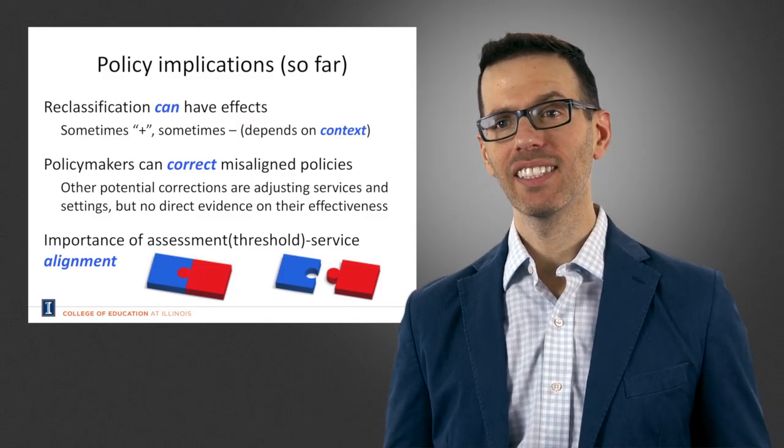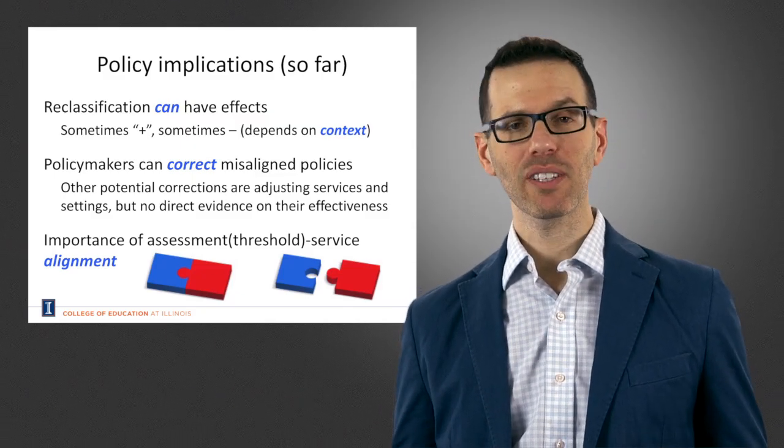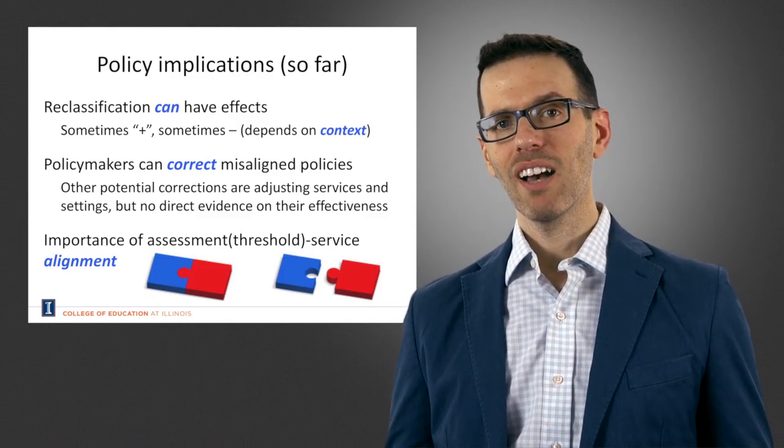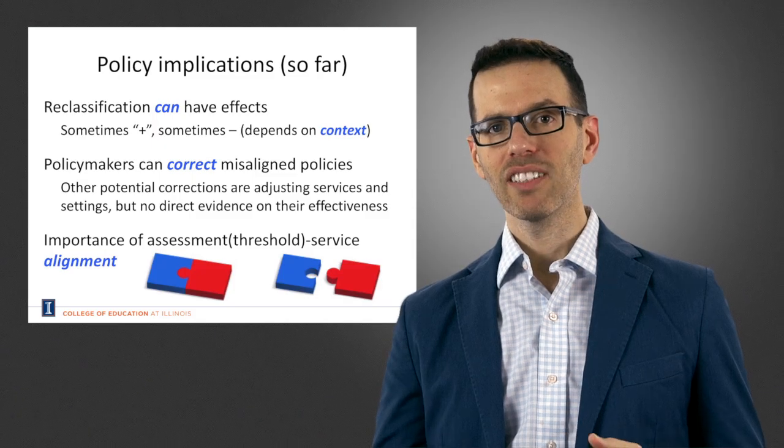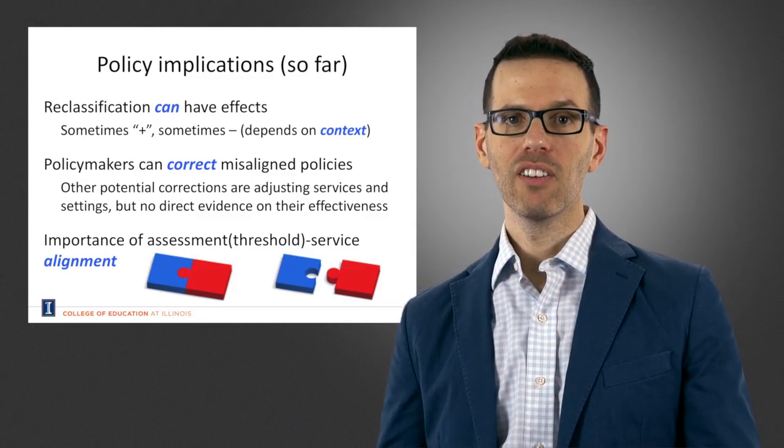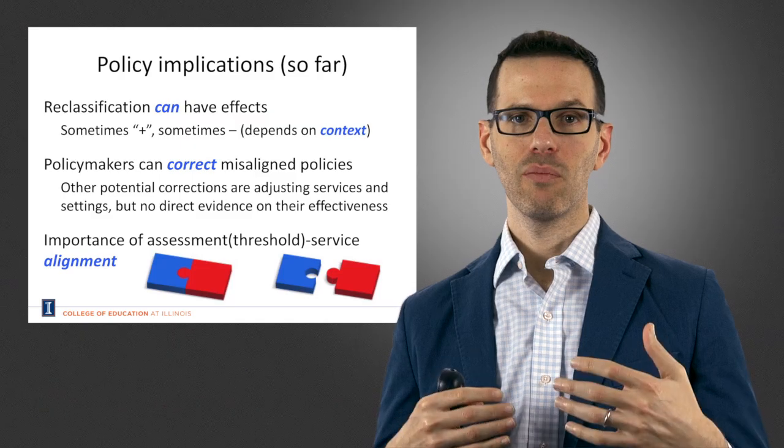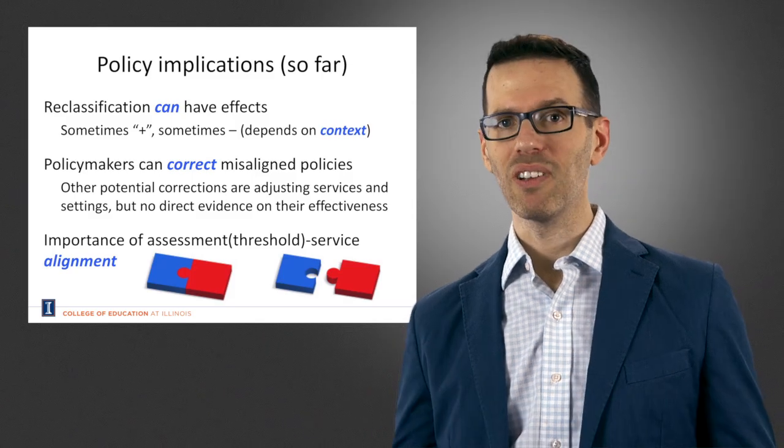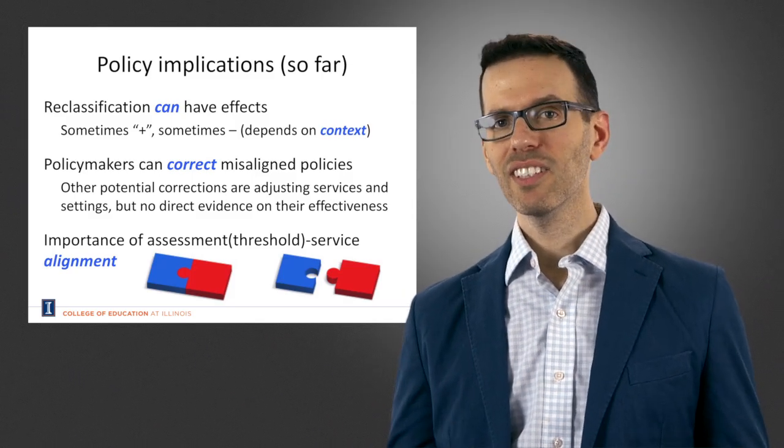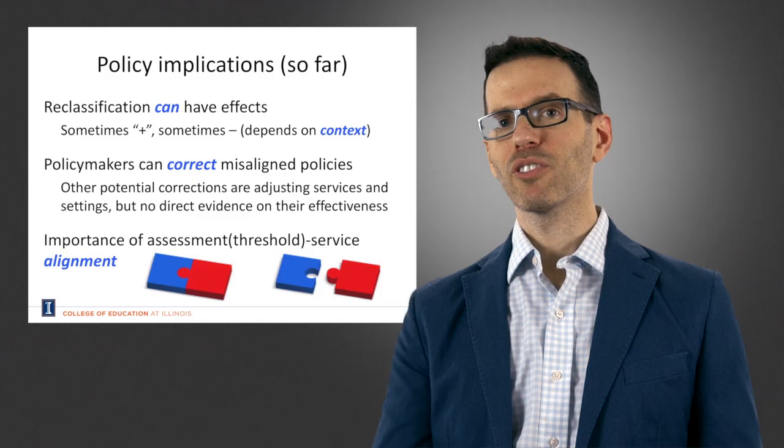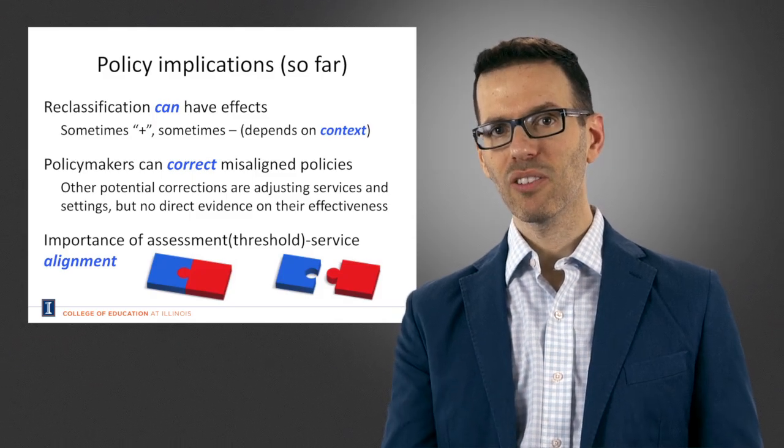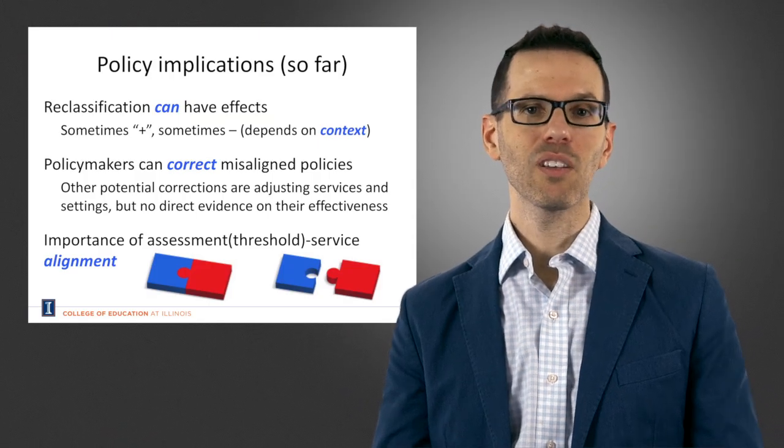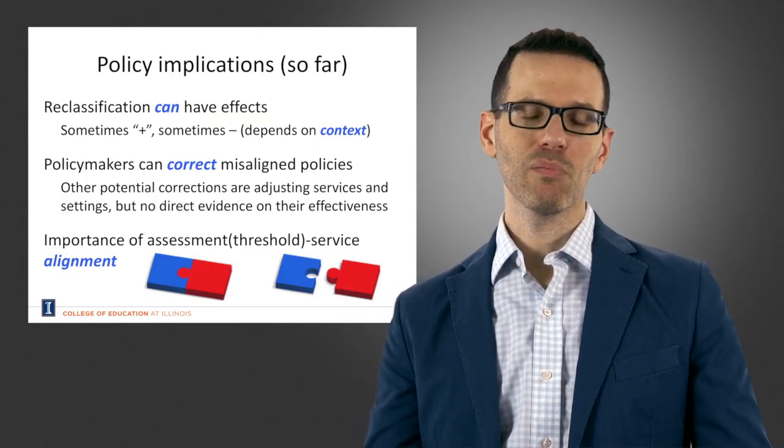The final point here that I want to highlight is the importance of assessment threshold service alignment. What I mean here is the particular analyses that we performed allow us to see if there's evidence that one setting is better than another setting for students at a particular point in the assessment threshold. They don't tell us necessarily if this is the best possible setting for students. It tells us the average setting for students who are English learners versus the average setting for students who are reclassified fluent English proficient. There could be some better setting for both sets of these students but we don't know that.